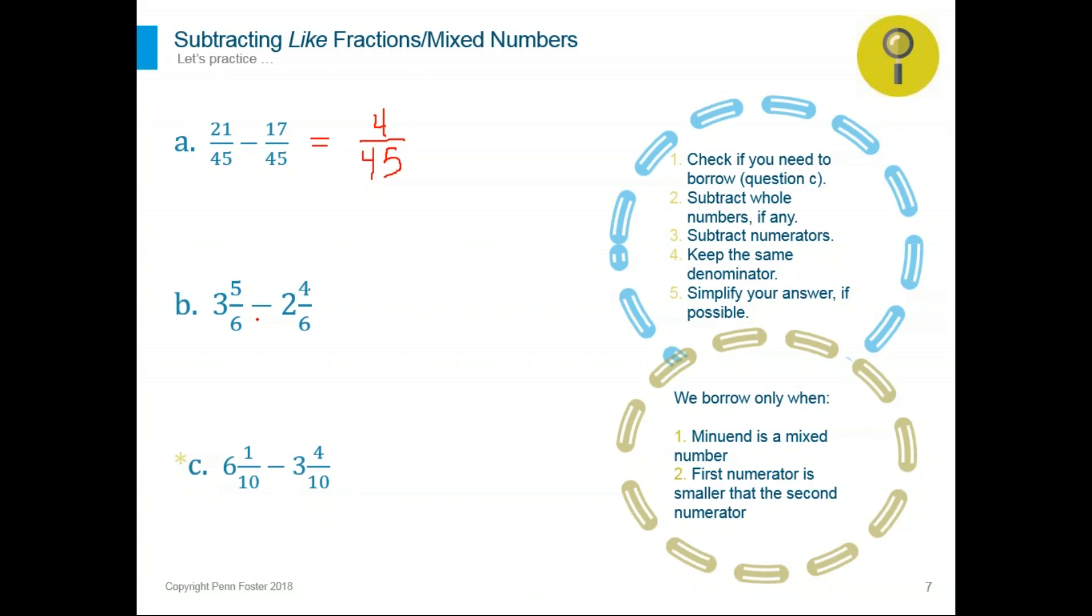Number B, 3 and 5 over 6 minus 2 and 4 over 6. Again, same denominators. We're going to do the same thing as we did with the mixed numbers when we added them. But this time we're going to subtract 3 minus 2. We're going to subtract the whole numbers is 1. 5 minus 4 is also 1, and then we keep the 6. 1 and 6, nothing common. So the answer is 1 and 1/6.